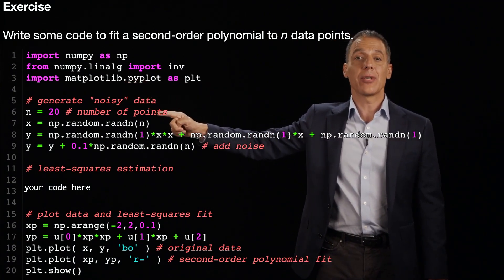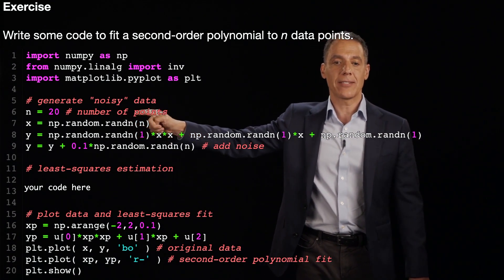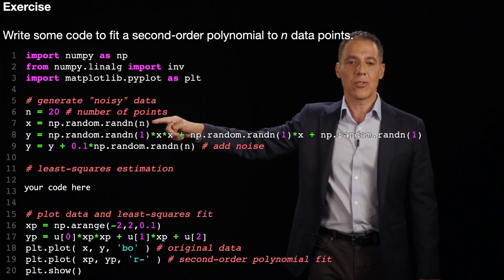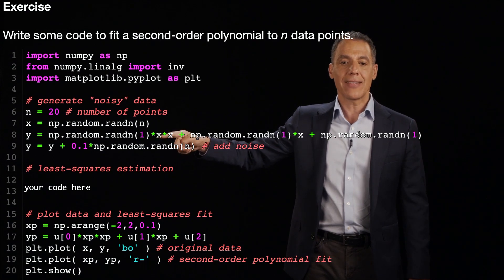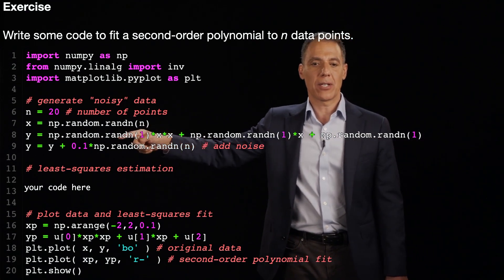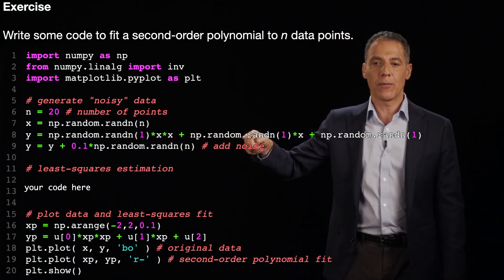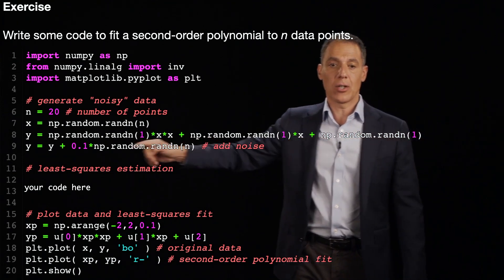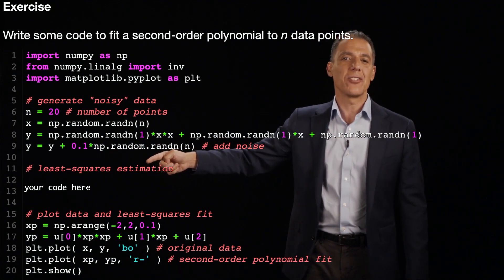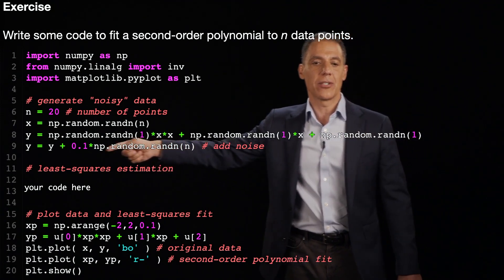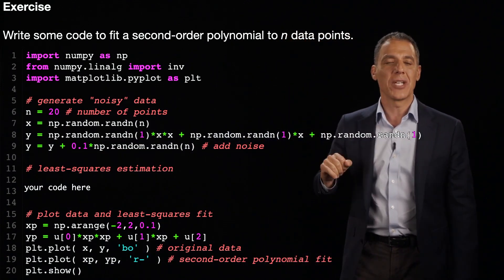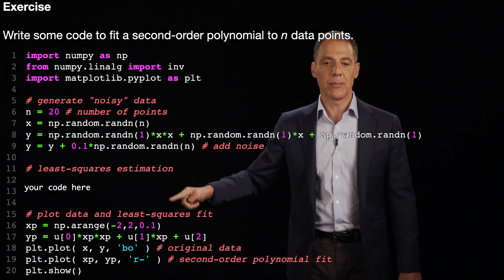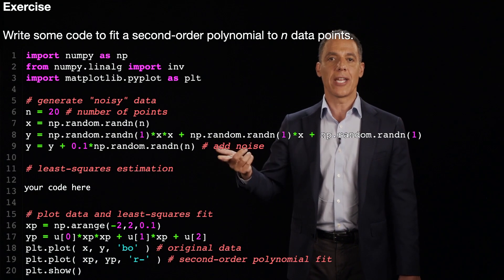All right, let's write some code. This is going to be an exercise. I'm going to give you some scaffolding for the code, and I'm going to ask you to fill in a little bit of code right here. Write some code, please, to fit a second-order polynomial to N data points, what we just saw on the previous slide. Import some libraries. I'm going to generate some data for you. So I'm going to have 20 data points. That's N right there. You can play with these parameters, by the way. I'm going to pick some random values for X. Okay, so there it is right there. And I'm going to set the Y values to be sort of parabolic. So I'm going to pick a random coefficient A times X squared, a random coefficient B times X, and a random coefficient C. Now, that will be a perfect parabola according to A, B, and C. So I'm going to add a little bit of jitter, a little bit of noise.